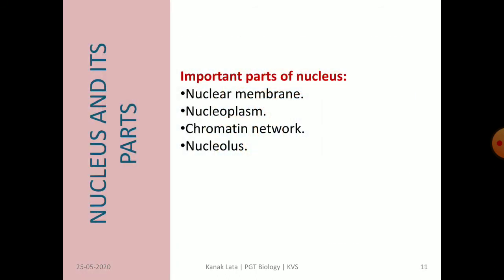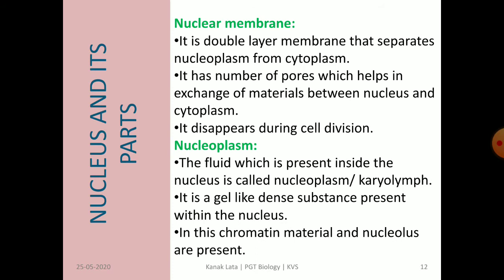The important parts of the nucleus are nuclear membrane, nucleoplasm, chromatin network, and nucleolus. First is the nuclear membrane. It is double-layered and separates the nucleoplasm from the cytoplasm. The nuclear membrane consists of a number of pores that help in the exchange of material between the nucleus and cytoplasm. It disappears during cell division.